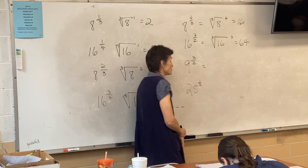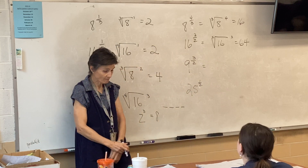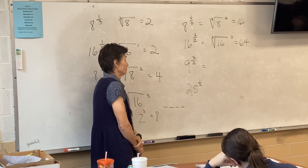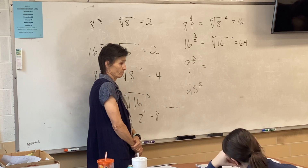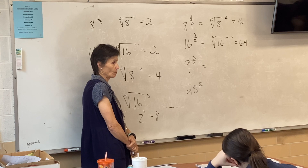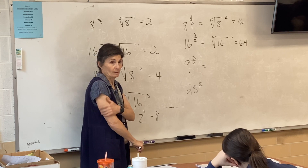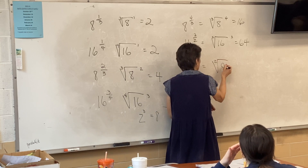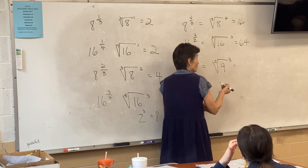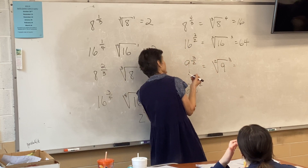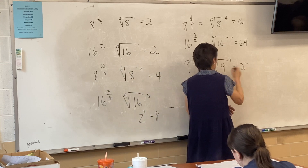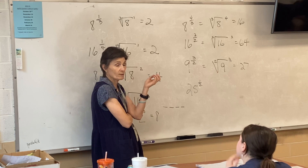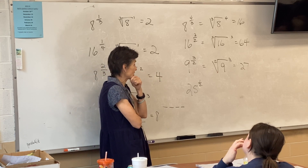Try this one: nine to the three-halves. What does that mean? It means the square root of nine, cubed, which is 27. Because the square root of nine is three, and three times three times three — three cubed — is 27.